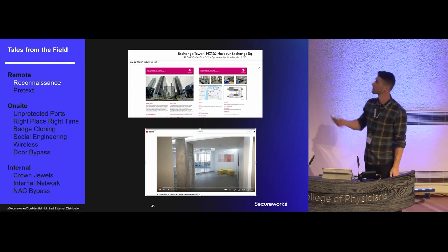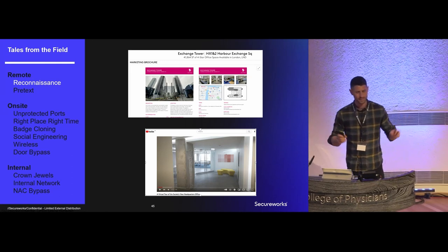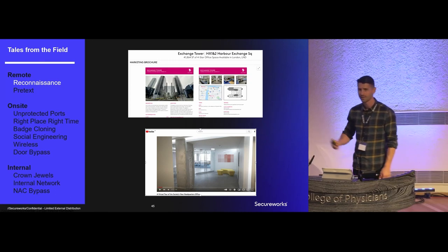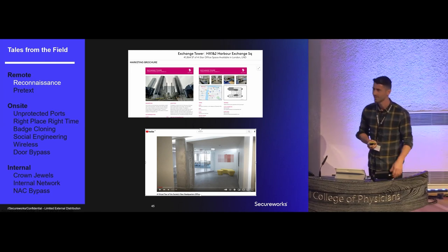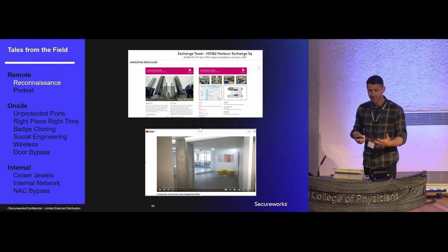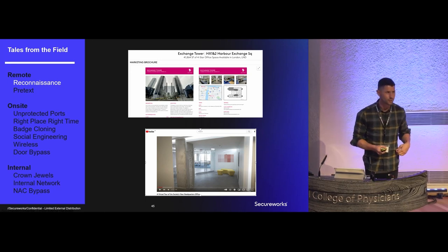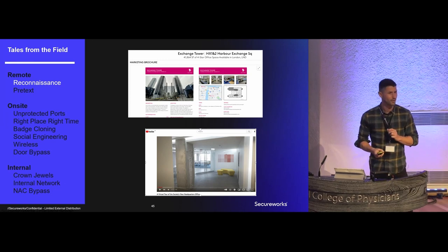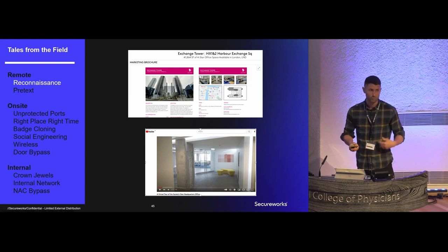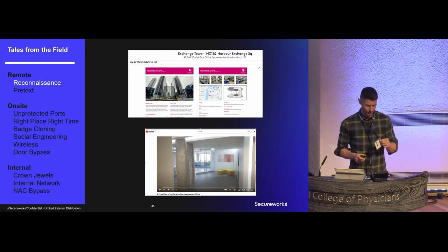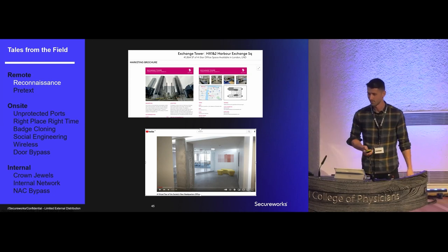Another great source is when organizations move to a fancy new office and post a YouTube video about it — showing the pool table, air hockey, beer fridge — to recruit talent. These videos are very useful for threat actors because they often disclose what kind of access control is used on doors, what employees are wearing, whether it's business casual or formal, what the lanyard looks like and what color it is, and sometimes even a picture of their badge. All of this can be gathered remotely to know whether to bring a shirt or flip-flops, what color lanyard to bring, or whether to print a similar badge before showing up.